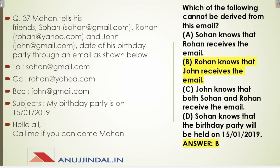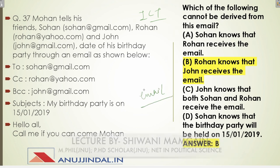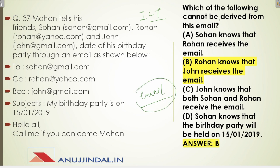Question 37 is from ICT. Mohan tells his friends — Sohan at gmail.com, Rohan at yahoo.com, and John at gmail.com — the date of his birthday party through an email. The question asks which of the following cannot be derived from this email. Sohan knows that Rohan receives the email — very true. Rohan knows that John receives the email — completely wrong, Rohan will not know at all. John knows that both Sohan and Rohan receive the email — 100% true. Sohan knows the birthday party will be held on the 15th — also true.